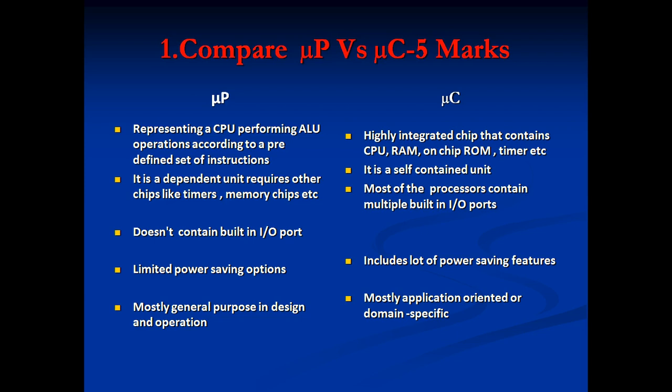In a microprocessor, it represents a CPU performing ALU operations according to a predefined set of instructions. A microcontroller is a highly integrated chip that contains a CPU, RAM, on-chip ROM, timers, etc. The microprocessor is a dependent unit requiring other chips like timers and memory chips, but a microcontroller is a self-contained unit that doesn't need any external memory chips.